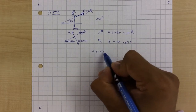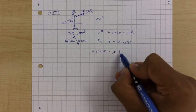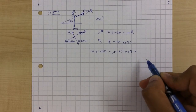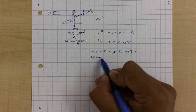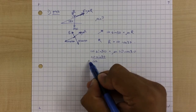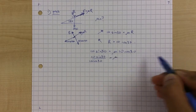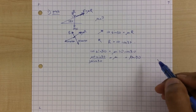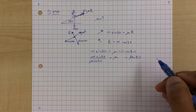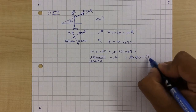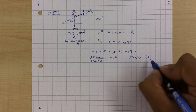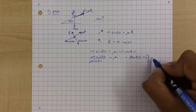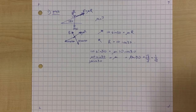So 10 sin 30 equals mu times R. Substituting R equals 10 cos 30, we get mu equals 10 sin 30 over 10 cos 30, which cancels to tan 30. And tan 30 equals root 3 over 3. That's a straightforward example. It doesn't always simplify to tan of the angle, but in this case it does.